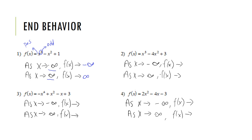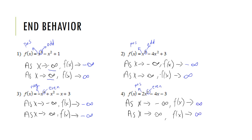For number 2, we also have an odd degree and a positive leading coefficient, so the end behavior is the same as number 1: as x goes negative, f(x) goes negative, and as x goes positive, f(x) goes positive. For number 3, we have an even degree and a negative leading coefficient, so both ends go in the same direction — both towards negative infinity. For number 4, we have an even degree and a positive leading coefficient, so both ends go to positive infinity.